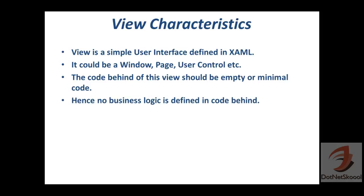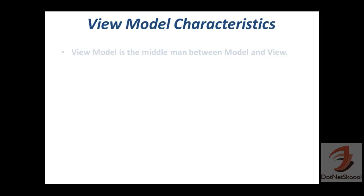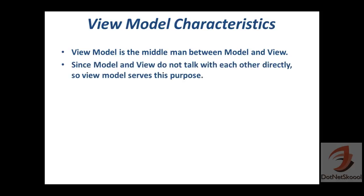You don't write anything in the code behind of the View, so no business logic is defined there. These points will become very clear when we build the application. Now, the ViewModel is the middleman between the Model and the View. Model and View are isolated from each other — they don't know anything about each other. The ViewModel makes them communicate.